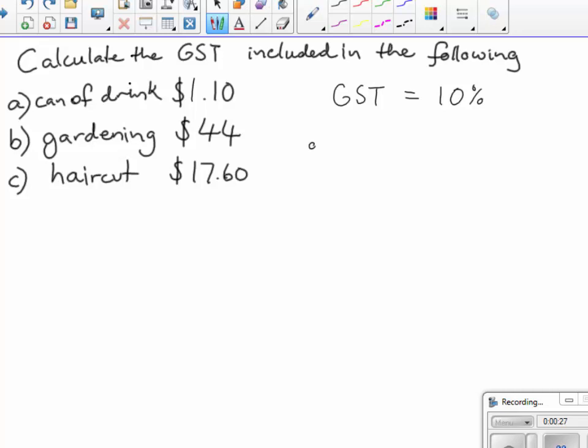So for A, I get $1.10 and I would divide by 11, and that equals 10 cents. So the GST on that can of drink is 10 cents.